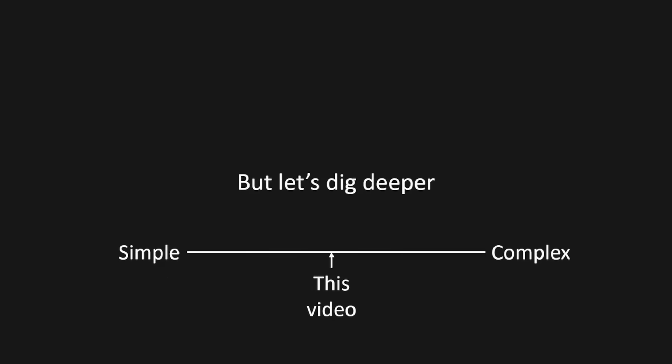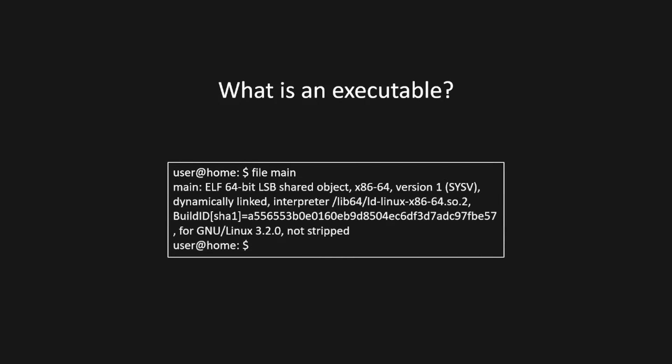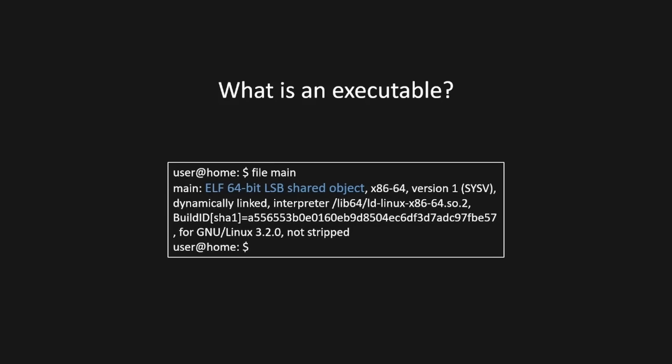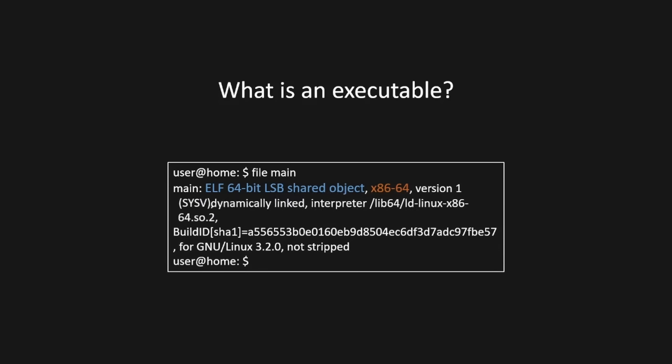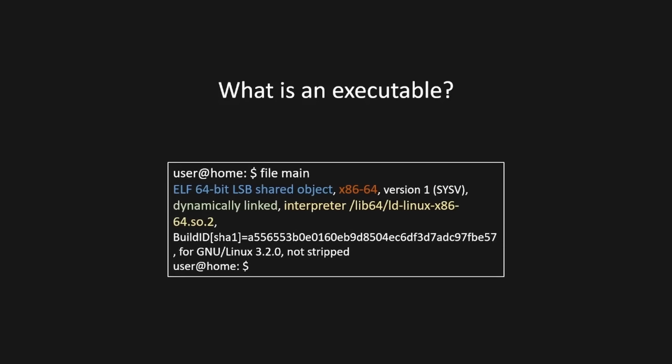Let's start digging a little bit deeper into how the exec syscall is actually working under the hood. First we have to ask: what is an executable? If we run the file command on our executable that we built in the last step, we'll get a little bit of information about that. We can see that we have an ELF 64-bit LSB shared object — that tells us what kind of file this is. Then we've got x86-64, it's dynamically linked, and the interpreter is found at a specific path.